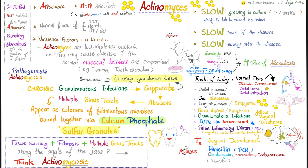Actinomyces are gram-positive rods — not aerobic, not acid-fast, meaning they are not acid-resistant. If you put an acid solution on them, it will decolorize them. Actinomyces are branching filamentous organisms resembling the hyphae of a fungus, which is why they are called myces and why the disease is called actinomycosis, even though it is technically a bacterium. But the old name remains.